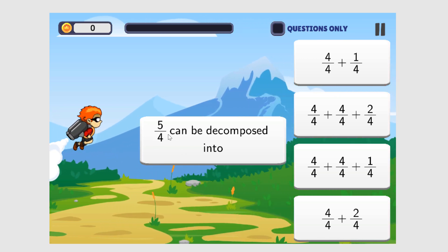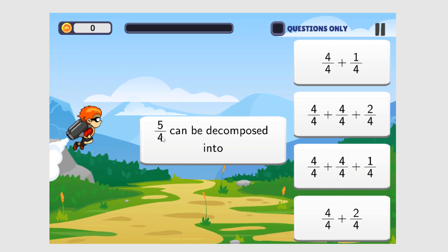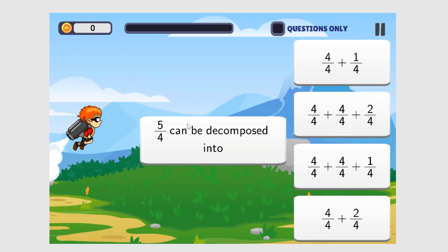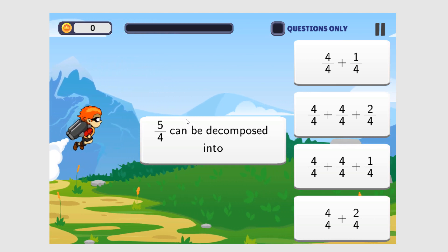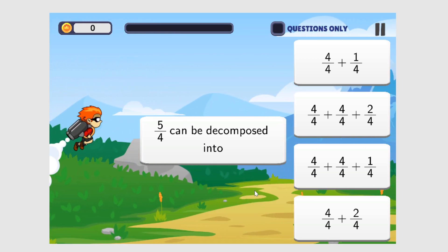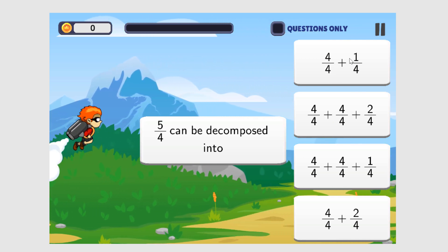Five-fourths can be decomposed into... Well, let's do the division. Five divided by four is one and one left over. So the answer is one and one-fourth. Looking at these answers, we can see one and one-fourth right here.